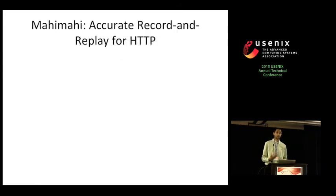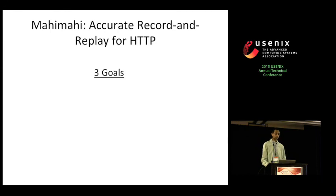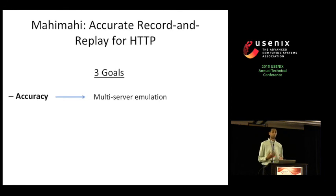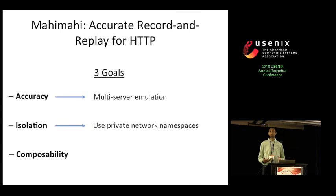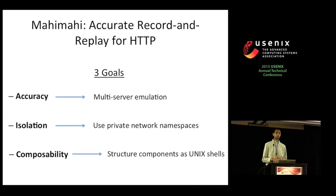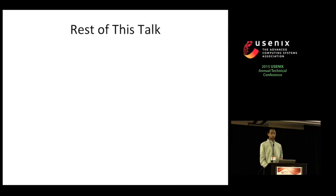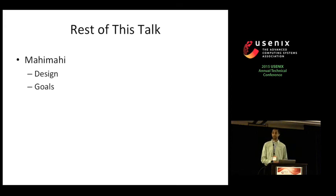To overcome these issues, we created a new record-and-replay framework called MahiMahi. We had three main goals: first, to provide accurate measurements, achieved by preserving the multi-server nature of web applications during replay. Next, to provide isolation for experiments, achieved using Linux's network namespaces — logical copies of the network stack that include routes and interfaces. Lastly, we wanted each component to be composable for experimental flexibility, achieved by structuring each component as a Unix shell.